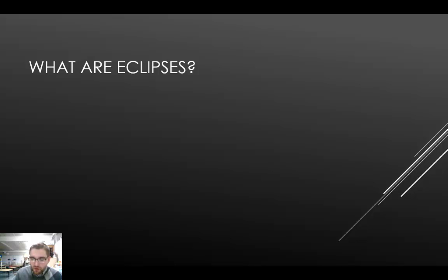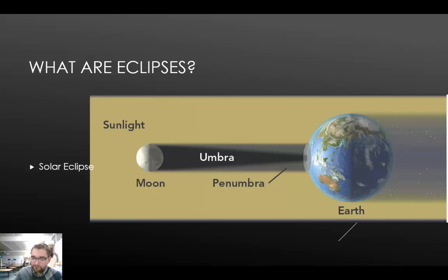The words solar and lunar come from the Latin words for sun and moon. During a new moon, the moon lies between Earth and the sun. A solar eclipse occurs when the moon passes directly between Earth and the sun, blocking sunlight from Earth. The moon's shadow then hits Earth. A total solar eclipse occurs when the very darkest part of the moon's shadow, the umbra, passes directly over the area where we live.